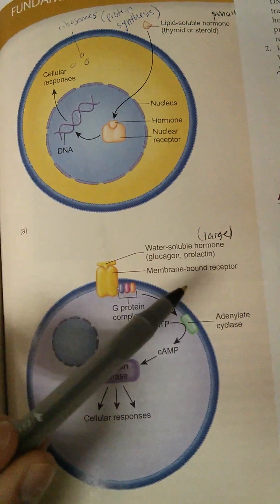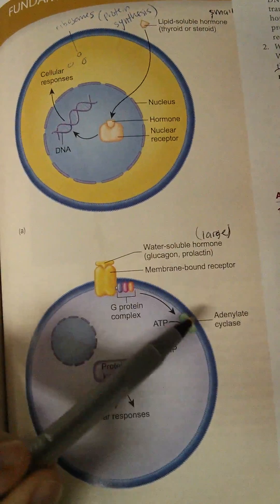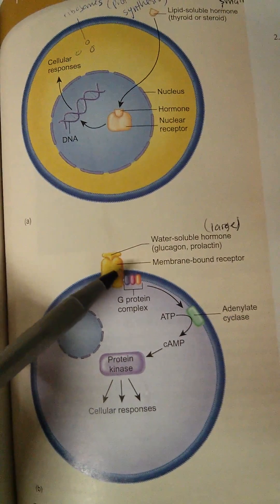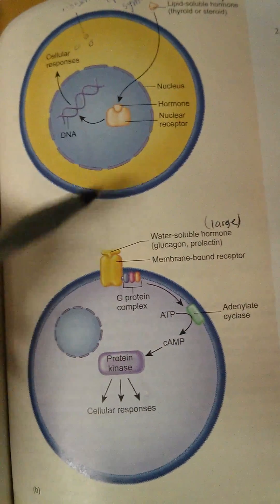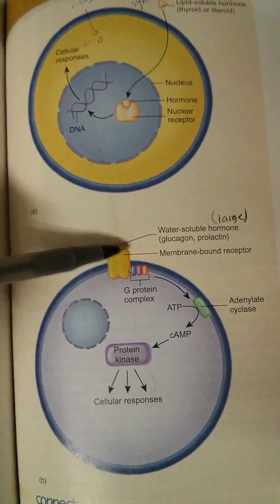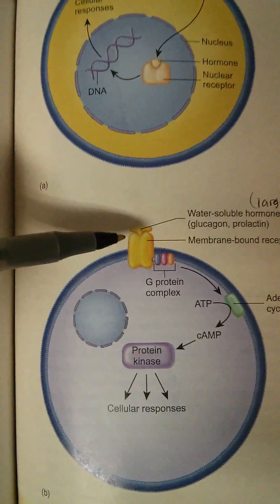Membrane-bound meaning that they are bound to or stuck on the membrane. So these receptors are on the membrane, and when the hormones come floating around, they attach to the receptor on the actual membrane.